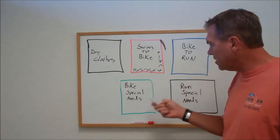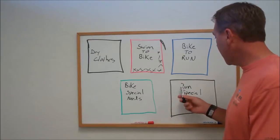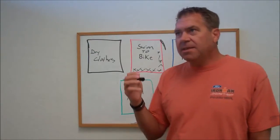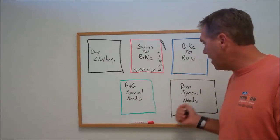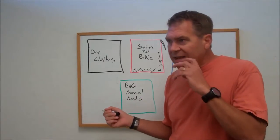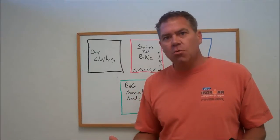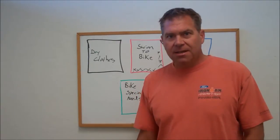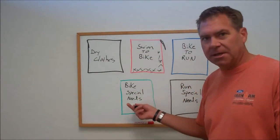Now, you also get two special needs bags. You get a bike special needs bag and a run special needs bag. And these bags you get basically about halfway on the bike course or halfway on the run course. And these bags are like what they are, special needs. Anything you think that you might need halfway through the bike or halfway through the run goes in this bag.